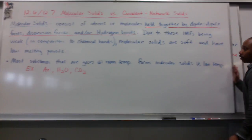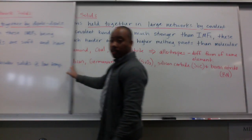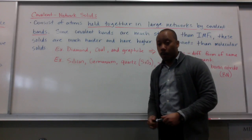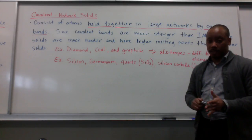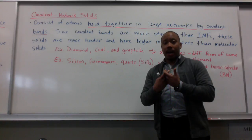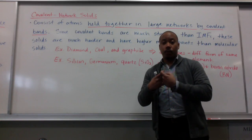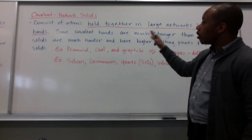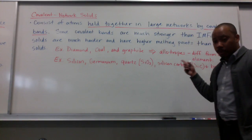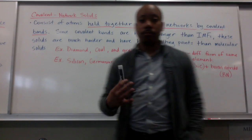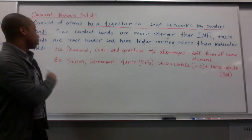A covalent network solid is similar, but still very different. It consists of atoms held together in large networks by covalent bonds — not by intermolecular forces. Since covalent bonds are much stronger than intermolecular forces, these solids are much harder and have much higher melting points than molecular solids.